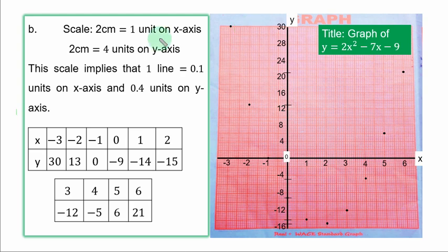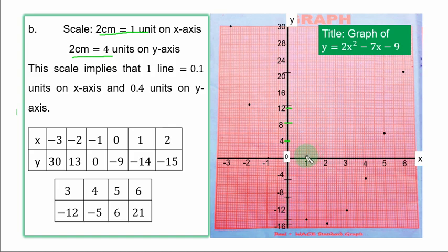We are now in part b and we have to plot the graph. This is the given scale: 2 cm to 1 unit on the s-axis, and 2 cm to 4 units on the y-axis. Each square on the graph is 1 cm by default. So if you combine 2 squares, you give it 4 on the y-axis. The next 2 becomes 8, the next 2 is 12, and so on.